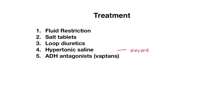Hypertonic saline is another treatment option, but this is really only given in cases of severe hyponatremia where the serum sodium levels are very low and patients are presenting with symptoms like seizures. Vaptans are another class of medications that can also be used — they work as ADH antagonists. However, they're not usually given as first-line treatments because they're expensive and have been associated with liver toxicity. For most test questions, the main treatment options you'll need to know are fluid restriction and salt tablets.